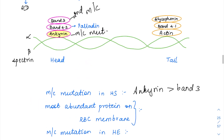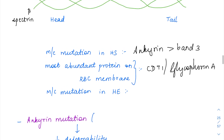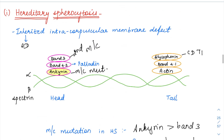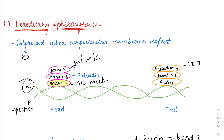The most abundant protein on the RBC membrane is CD71 or glycophorin A. Regarding hereditary elliptocytosis — as the name suggests, the RBCs rather than being biconcave acquire a shape like an ellipse, while in hereditary spherocytosis they become spheres like a ball. The most common mutation in hereditary elliptocytosis is going to be alpha spectrin mutation.